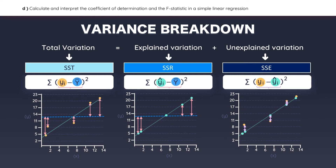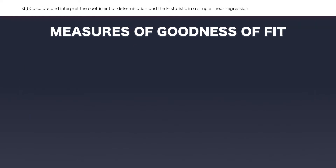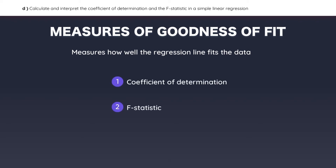Notice how the explained variation is based on the Y values that can be explained by the regression line, while the unexplained variation comes from the error terms. The reason why these three components are so important is because they can be used to measure goodness of fit, which basically tells you how well the regression line fits the data. There are two common ways to measure goodness of fit: the coefficient of determination and the F-statistic.